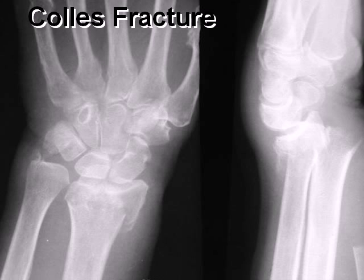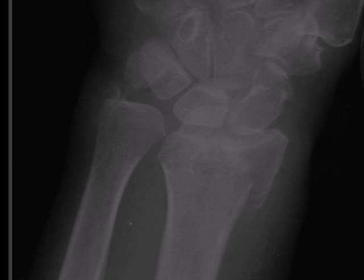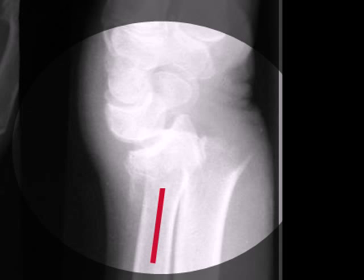This is an example of a Colles' fracture. On the frontal view, you can see the slightly impacted fracture of the distal radius. The red arrow is pointing to a fracture of the ulnar styloid. On the lateral view, you can see the fracture of the distal radius with dorsal or posterior angulation.